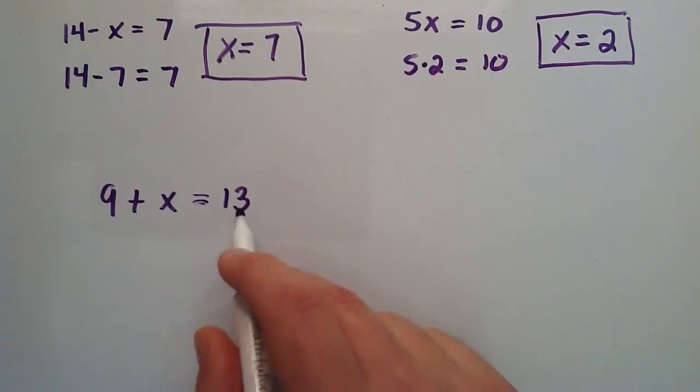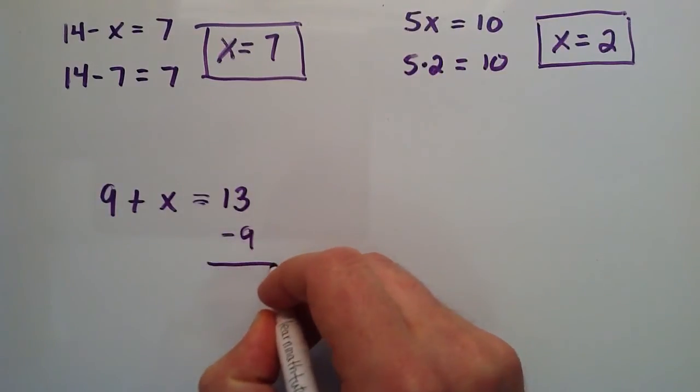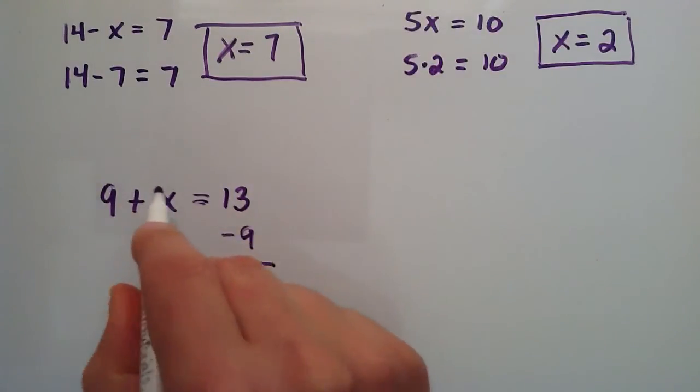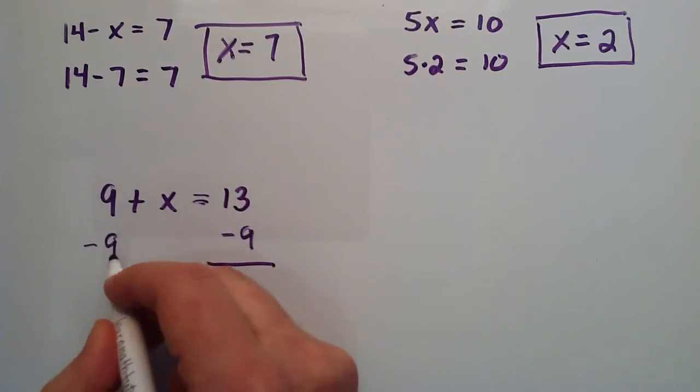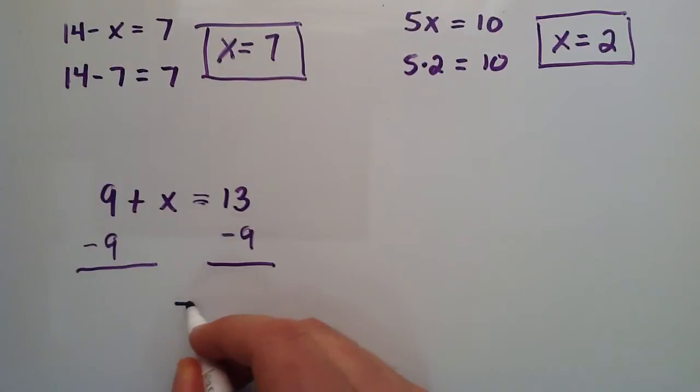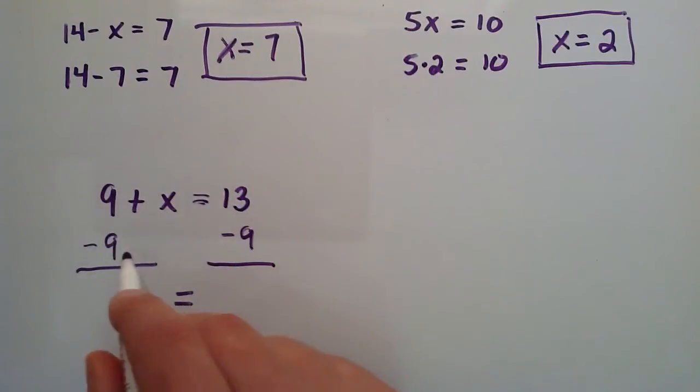If we subtract 9 from each side, then the result should be the same since these both equal 13. So, this is 13 minus 9 and 13 minus 9. That means that we started with the same answer, we subtracted the same value from each side, then the result should be equivalent.